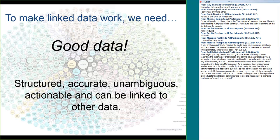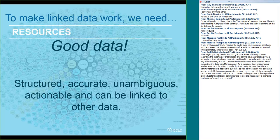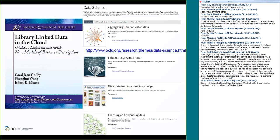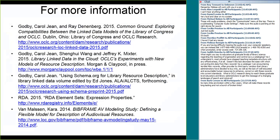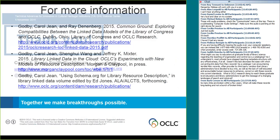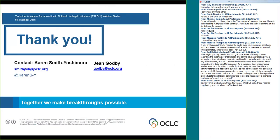To summarize: we walked through examples of how to get more structured, less ambiguous data from a MARC description without changing the semantics of the MARC record — in fact, using those semantics more strategically. There are resources available including the data science page from OCLC and a recently published book. I'd now like to open it up for questions.